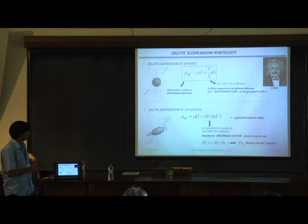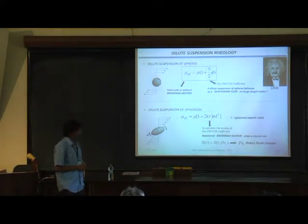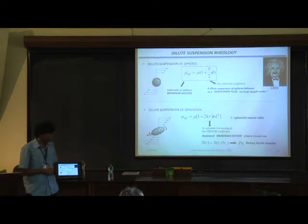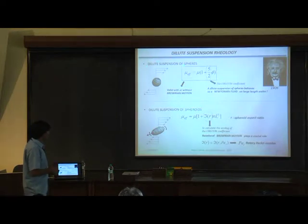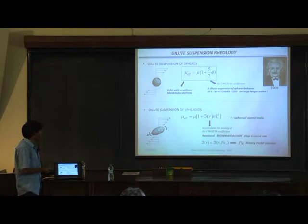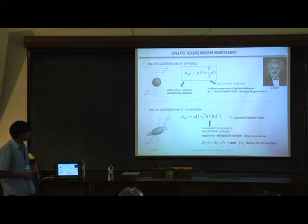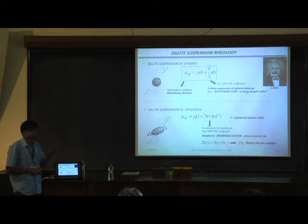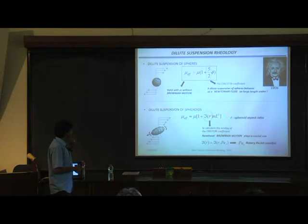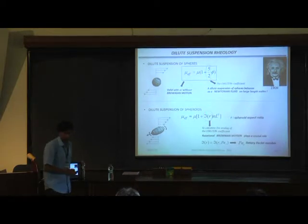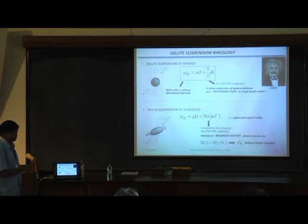Higher volume fraction cases were first done theoretically by Batchelor in the 70s. In this talk, we consider the same problem but with spheres replaced by spheroids, asking what is the analog of the Einstein coefficient. Since a spheroid has two dimensions — length and diameter — the natural volume fraction is the hydrodynamic volume fraction based on the largest length. The Einstein coefficient analog will be a function of the aspect ratio, which is the one dimensionless parameter.